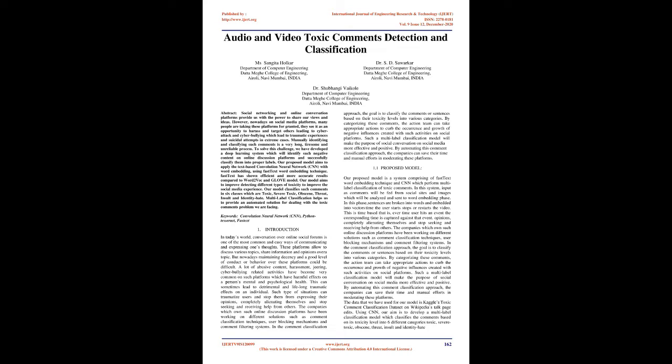Such situations can traumatize users and stop them from expressing their opinions, completely alienating themselves and stop seeking and receiving help from others. The companies which own such online discussion platforms have been working on different solutions such as comment classification techniques, user-blocking mechanisms and comment filtering systems. In the comment classification approach, the goal is to classify the comments or sentences based on their toxicity levels into various categories. By categorizing these comments, the action team can take appropriate actions to curb the occurrence and growth of negative influences created with such activities on social platforms. Such a multi-label classification model will make the purpose of social conversation on social media more effective and positive. By automating this comment classification approach, the companies can save their time and manual efforts in moderating these platforms.